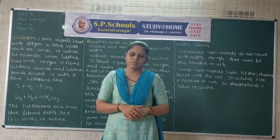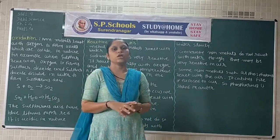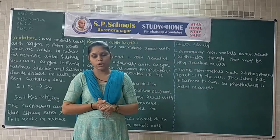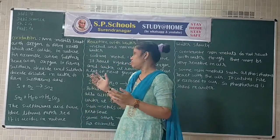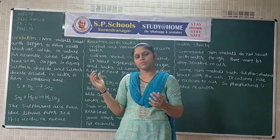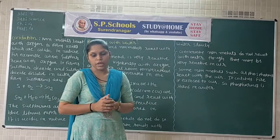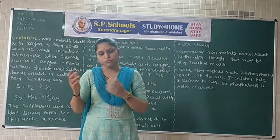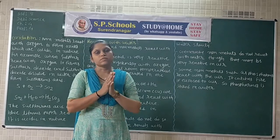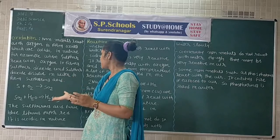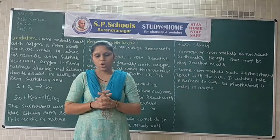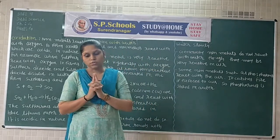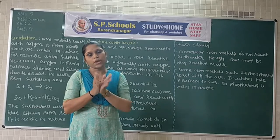Different acids are formed from non-metals: sulfuric acid is formed from sulphur and oxygen; hydrochloric acid is another example. Nitrogen and oxygen form acids as well. Sulfuric acid is formed from sulphur and oxygen. These are different acids formed from non-metals.